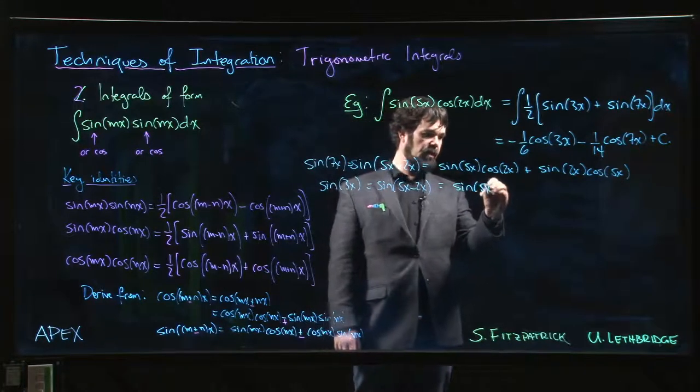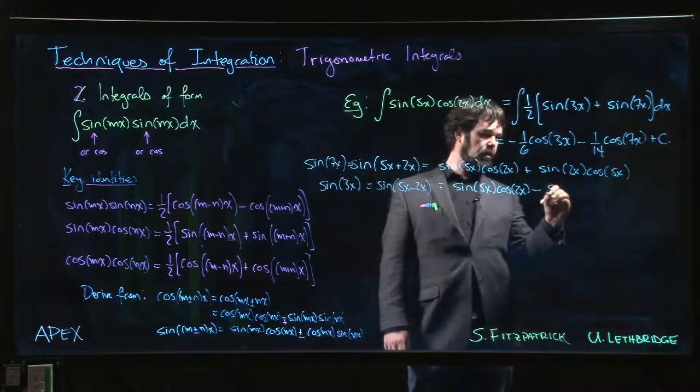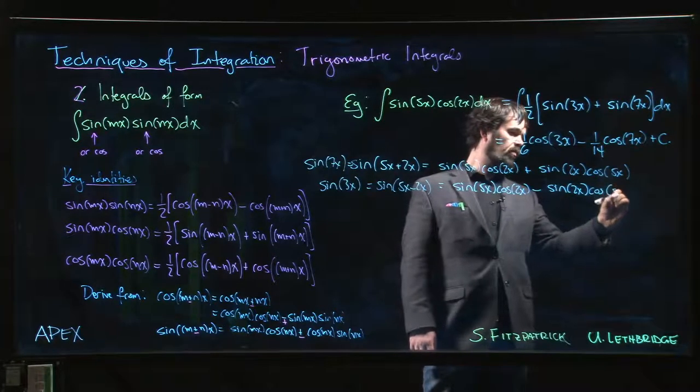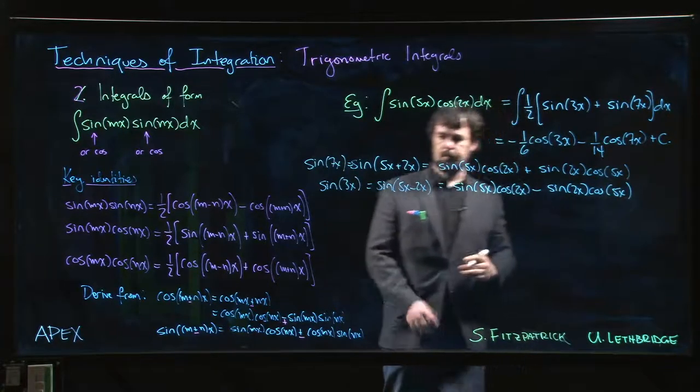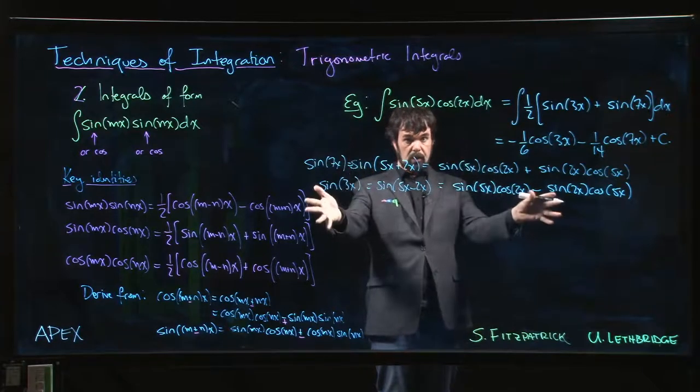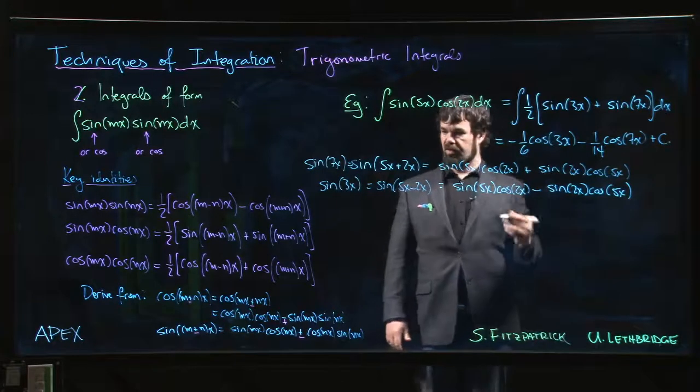So this is now going to be sine 5x cos 2x, but then it's going to be minus sine 2x cos 5x. So the point is that you now add the two equations together.